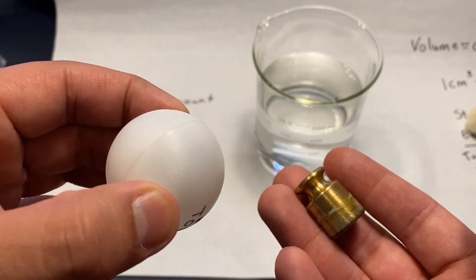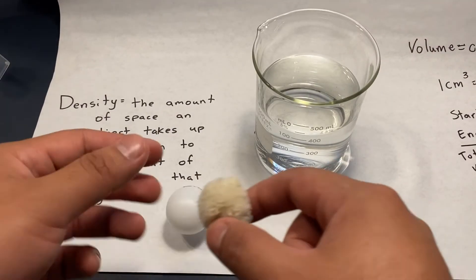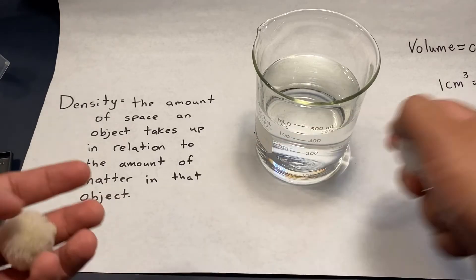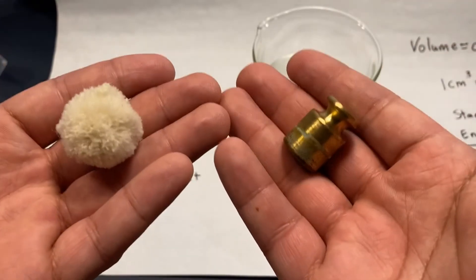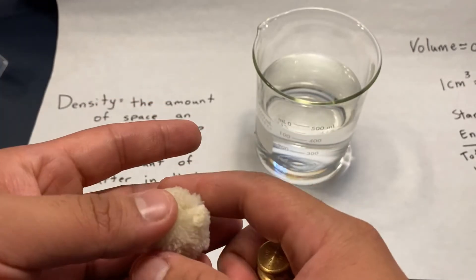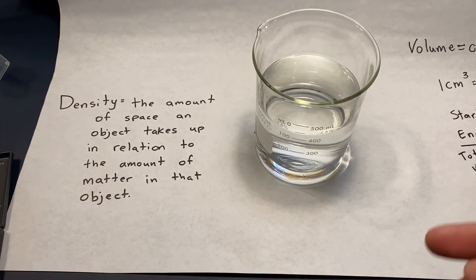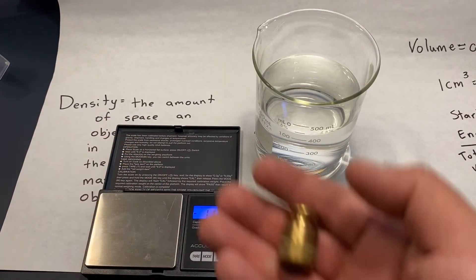Now we know that the ping pong ball is bigger, but it's also hollow. I do have a little puff ball right here. Which one is going to weigh more, the puff ball or the mass? I do have a digital scale which we are going to be using to measure the mass of the ping pong ball and the weight.